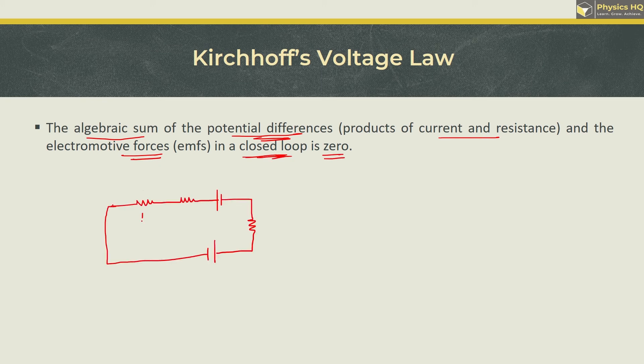Here's a simple example. This value is R1, this value is R2, this value is R3. Let us say this EMF is E1 and this EMF is E2. The common current is I. Then the potential drops across these resistances will be I into R1, I into R2, and I into R3.